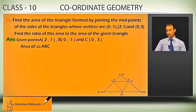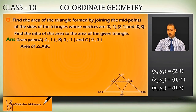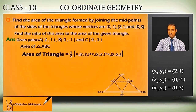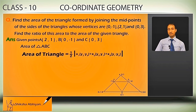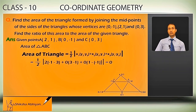First of all I will find the area of triangle ABC. For area of triangle ABC, I let x1,y1 = (2,1), x2,y2 = (0,-1), and x3,y3 = (0,3). Area of triangle = ½ |x1(y2 - y3) + x2(y3 - y1) + x3(y1 - y2)|. Now I will put in the values of x1, y1, x2, y2, x3, y3.